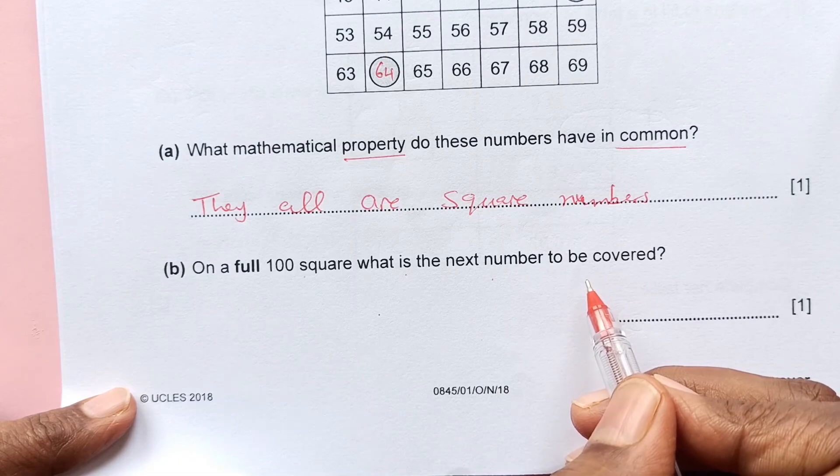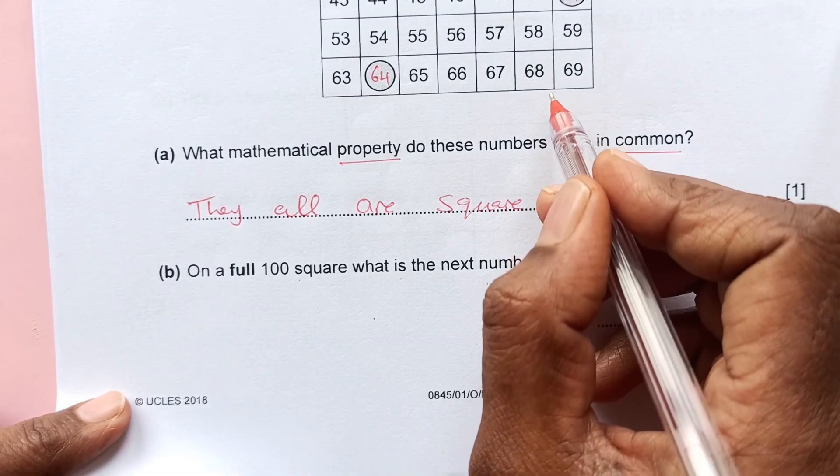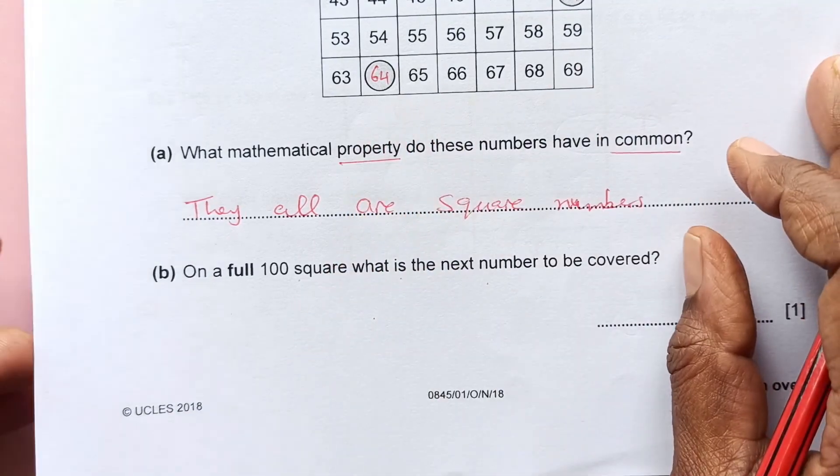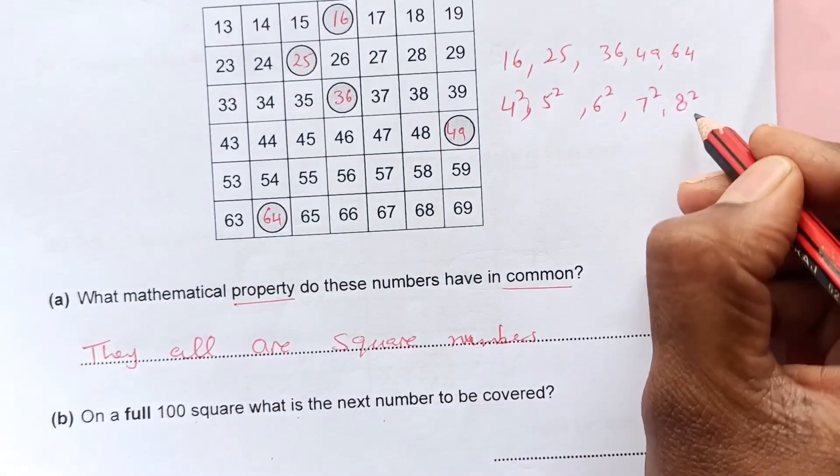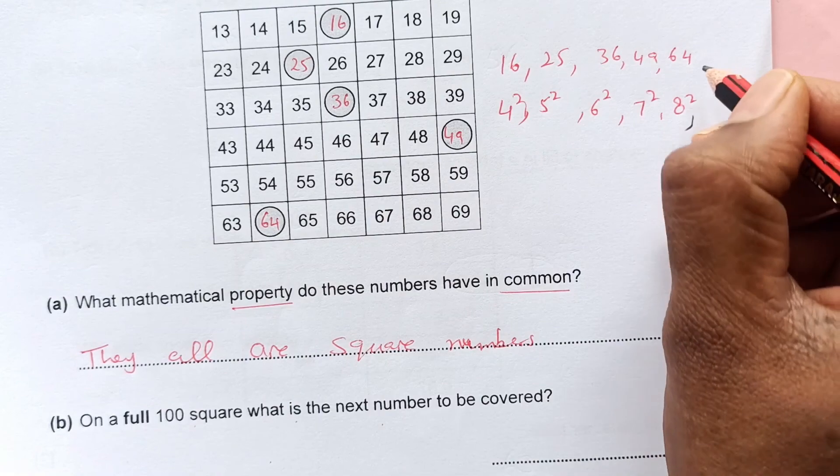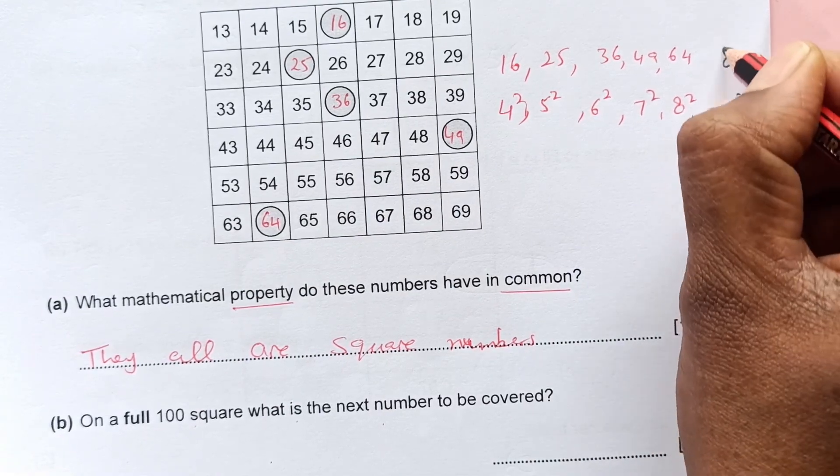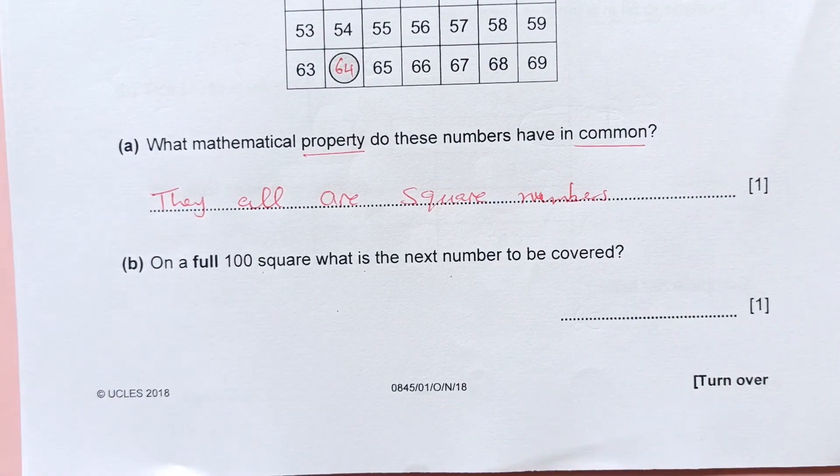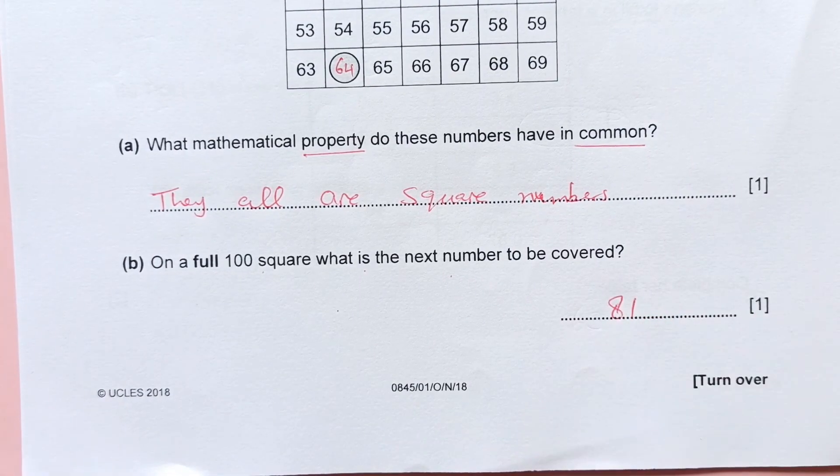On a full 100 square, what is the next number to be covered? After this, this is 8 squared, so next will be 9 squared. 9 squared is 81. So the next number should be 81.